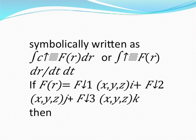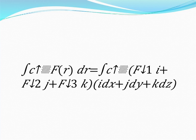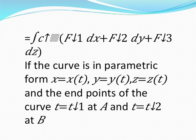If f(r) equals f1(x,y,z) i plus f2(x,y,z) j plus f3(x,y,z) k, then the integral over c of f(r) dr equals the integral over c of (f1 i plus f2 j plus f3 k) dot (i dx plus j dy plus k dz), that is equal to the integral over c of f1 dx plus f2 dy plus f3 dz.